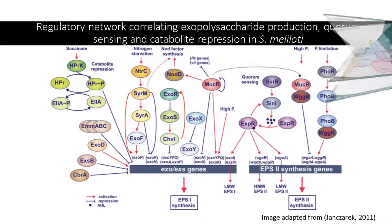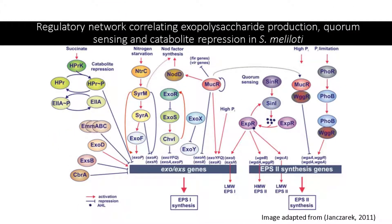Here we can see the regulatory network correlating exopolysaccharide production, quorum sensing, and catabolite repression. Regulation of EPS production is complex. In addition to abiotic stress and symbiotic inputs, EPS synthesis is regulated in response to levels of nutrients. For example, nitrogen starvation activates the production of EPS.